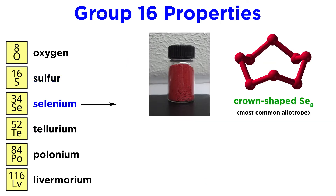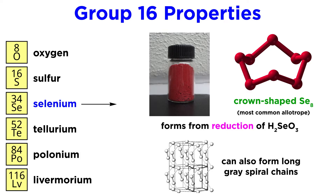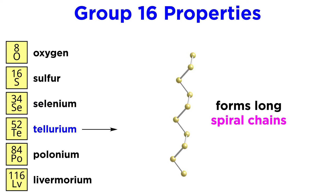Selenium also most commonly exists as Se8, which has a red color, formed from the reduction of H2SeO3, but it can also form long gray spiral chains. Tellurium will also tend to make long spiral chains.